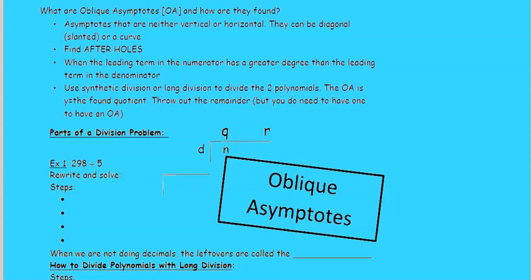The oblique asymptote is the y equals whatever quotient you find. To get the asymptote, you don't have to look at the remainder.